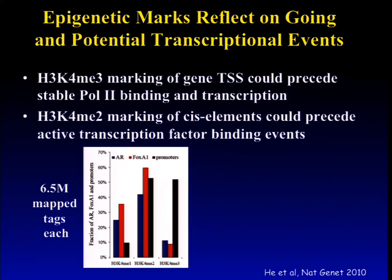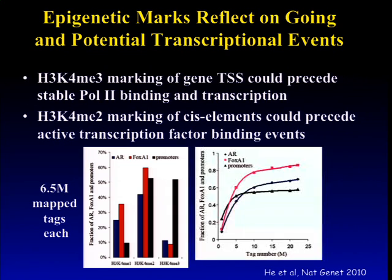Sequencing about 50 million tags, we reach saturation and get most of the active promoters and most of the functional transcription factor binding sites in the cell. We can reach about 70 to 80% of all binding sites. Basically from a single lane of sequencing, we can hit most of all the active transcription factor binding sites.